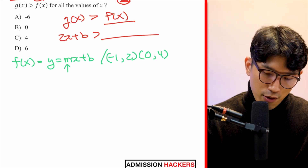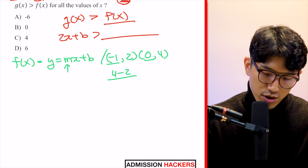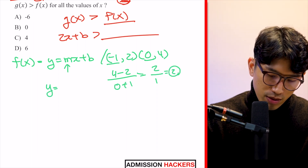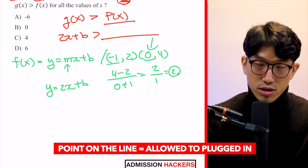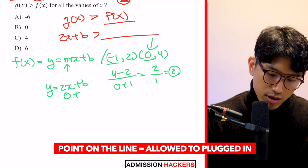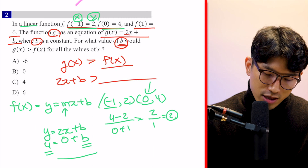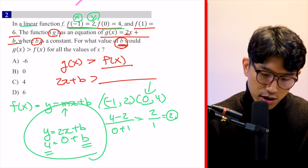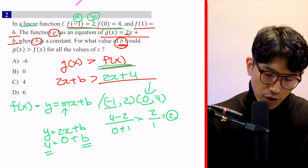To find b, we plug in the coordinate (0, 4): 0 + b = 4, so b = 4. Putting it all together, f(x) = 2x + 4. Now that we have the full inequality — g(x) > f(x) — we can find B.